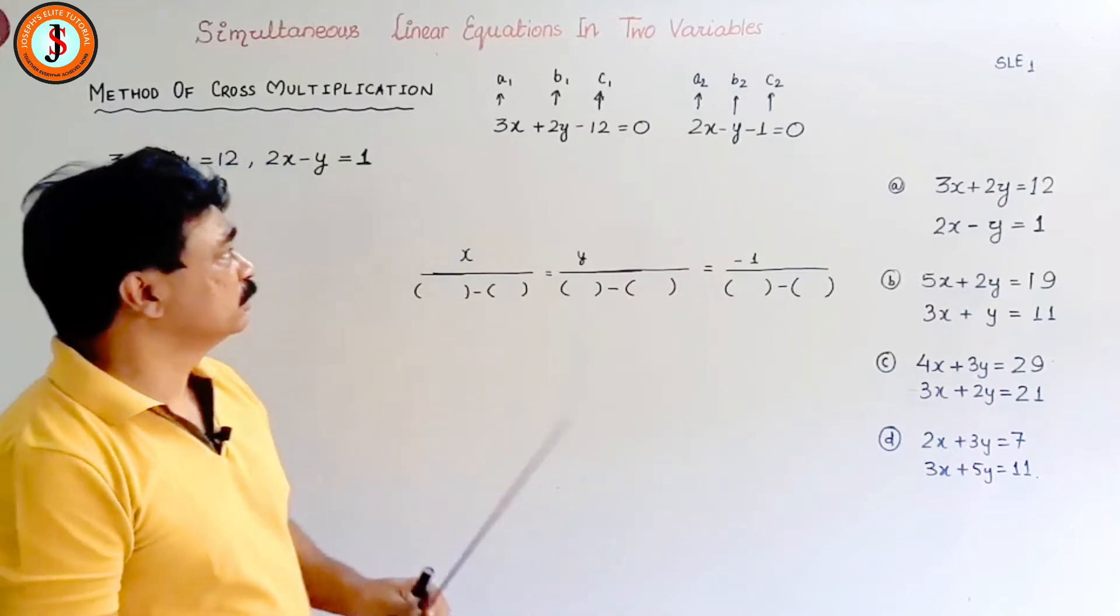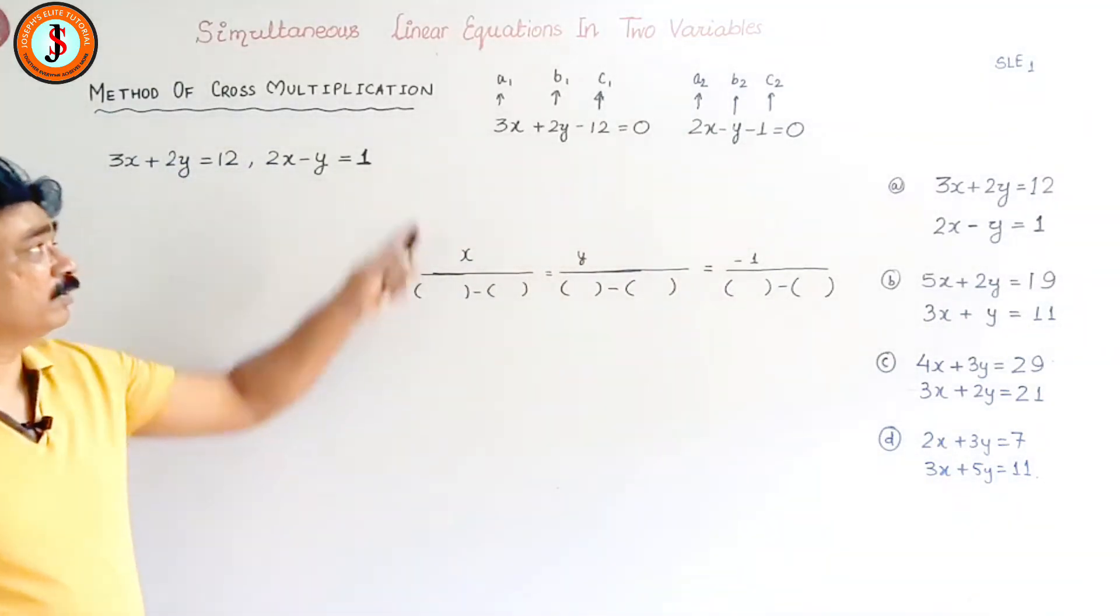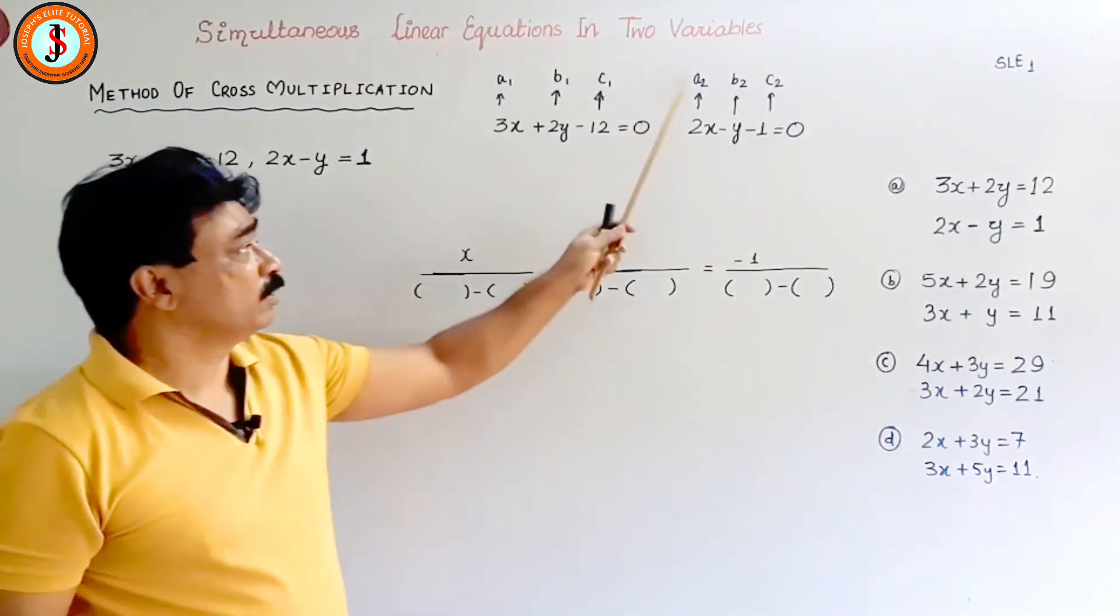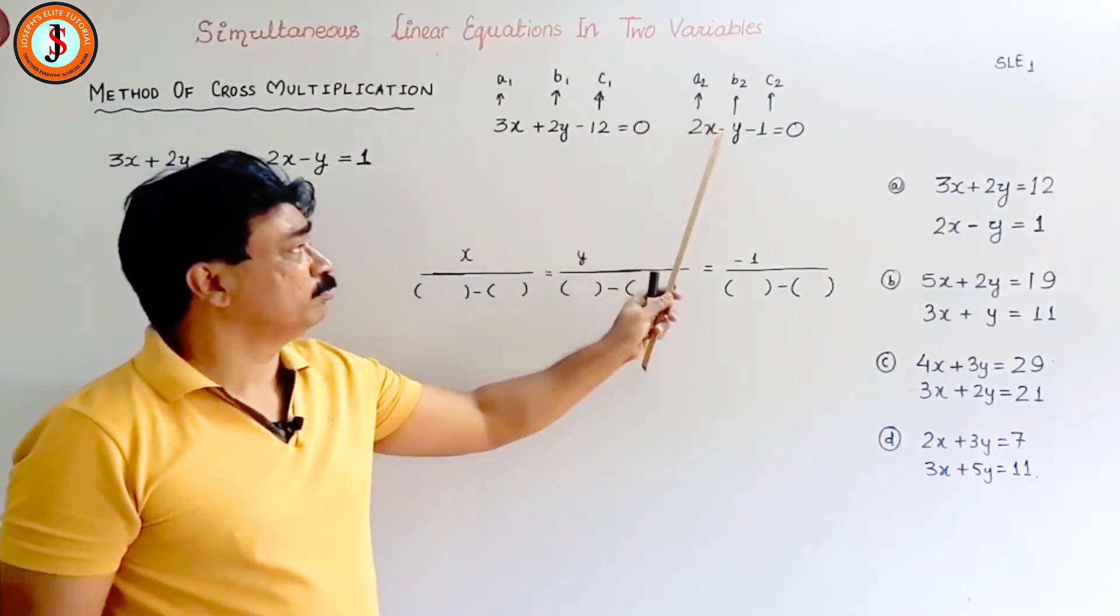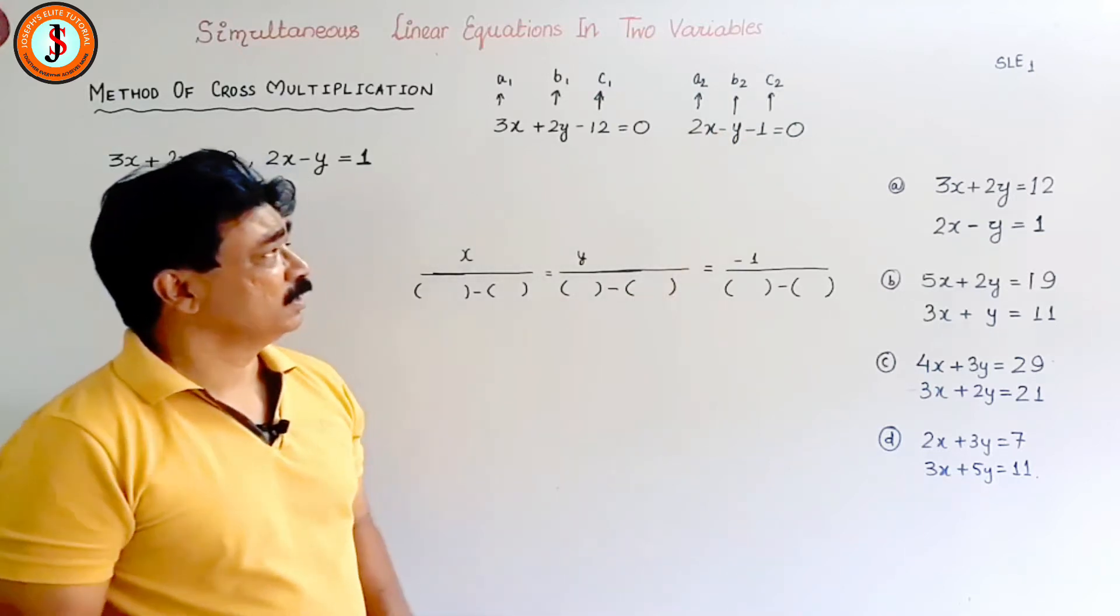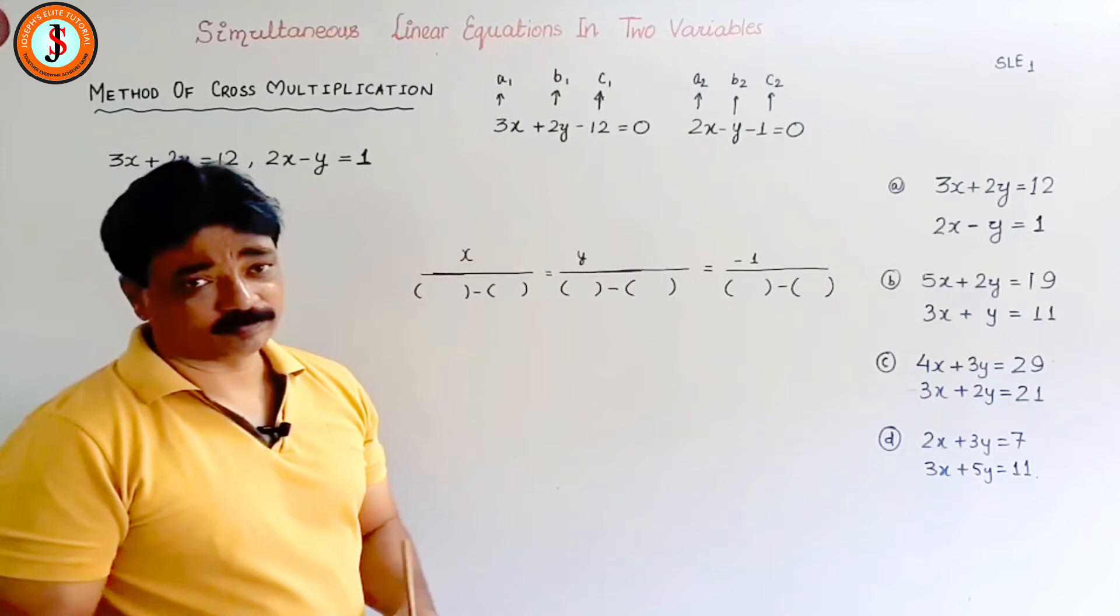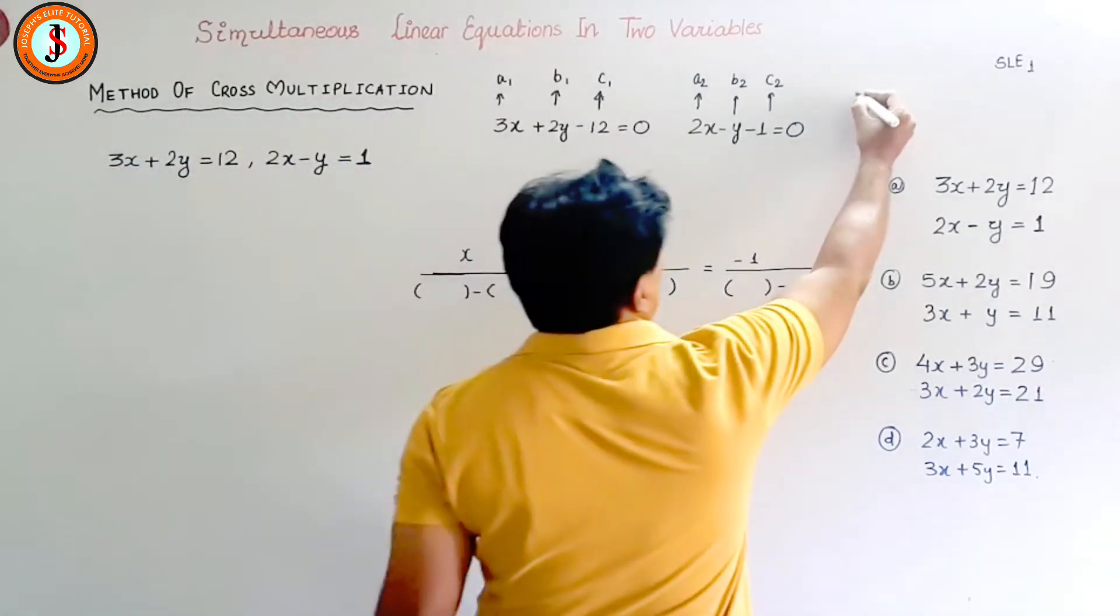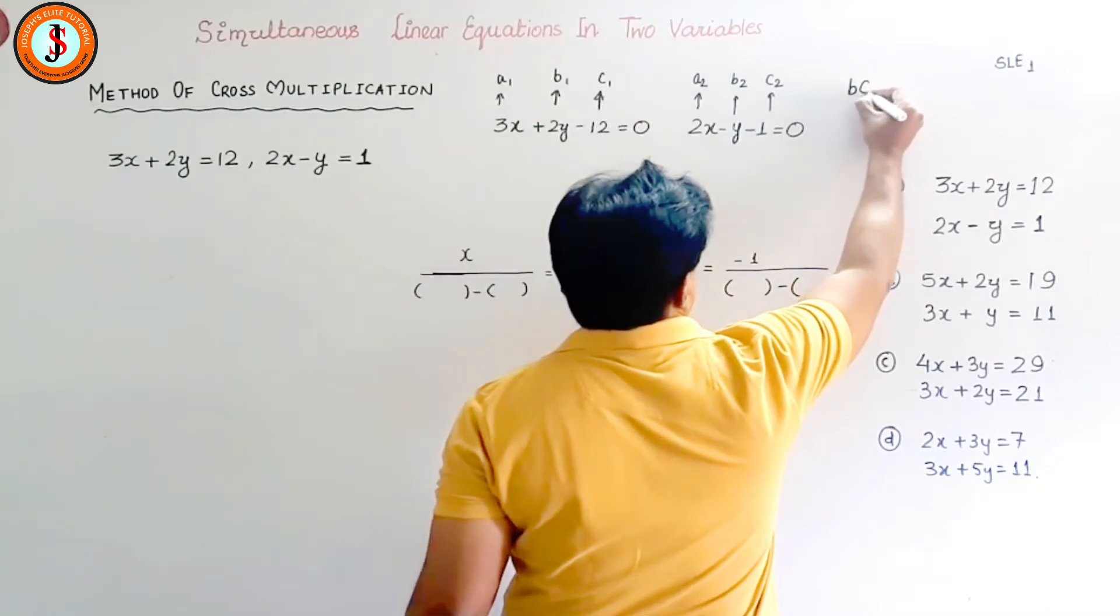Now let us start. a1 value will be 3, b1 value will be 2, and c1 will be minus 12. a2 value will be 2, b2 value will be minus 1 since nothing is there, so minus 1 with the sign, and c2 will be minus 1.